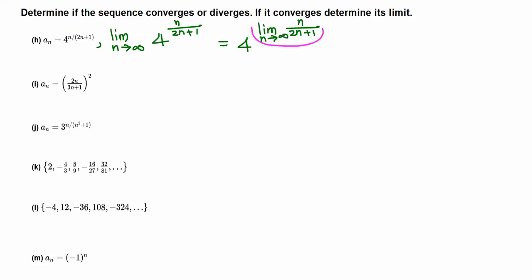Now we find this inner limit. When n goes to infinity, we have n over 2n plus 1. Since n is the leading term in the numerator and 2n is the leading term in the denominator, for an infinite limit only the leading terms matter. So n over 2n simplifies to 1 half. This limit equals 1 half, so we have 4 raised to 1 half.